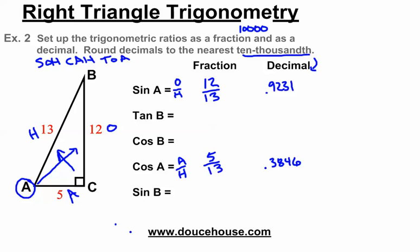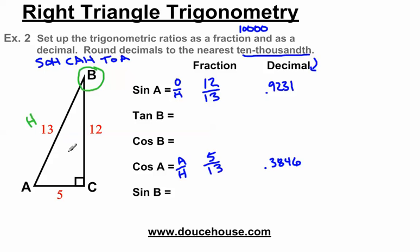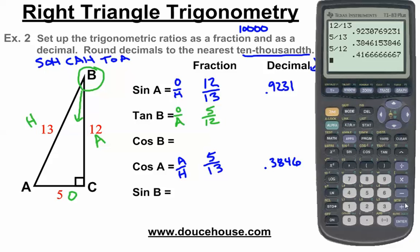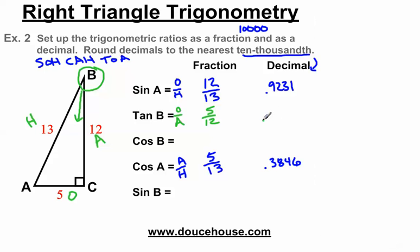Now let's move on to tangent of angle B. When I focus on angle B, the hypotenuse is still opposite the 90 degrees, but now the opposite and adjacent sides swap. The side opposite angle B is 5, and 12 is now the adjacent. For tangent of angle B — opposite over adjacent — that's 5 over 12. Rounding 5 divided by 12 to the nearest ten-thousandth gives 0.4167, because the digit 6 rounds the previous digit up to 7. So tangent B equals 5/12, or 0.4167.